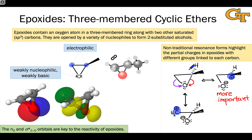The resonance structure in which positive charge resides on the more substituted carbon is a greater contributor to the true structure. This means that in the starting epoxide — and quantum chemical calculations bear this out — the partial positive charge on the more substituted carbon is significantly greater than on the less substituted carbon. Any reactivity driven by charge, by electrostatic interactions between the epoxide and a nucleophile, will tend to occur at the more substituted carbon with the greater partial positive charge.